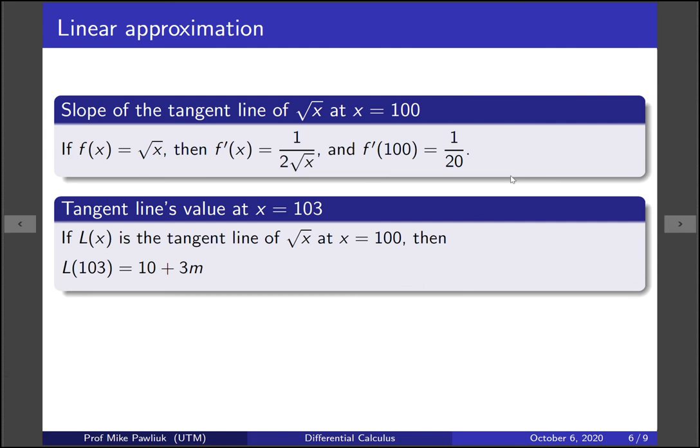So now to figure out what the tangent line gives as a value if you plug in x equals 103. Well we already know that it's going to be 10 plus 3 times the slope. Slope is 1 over 20.